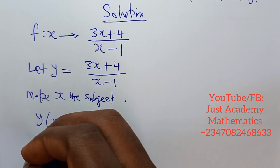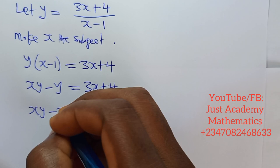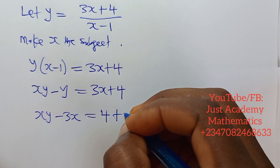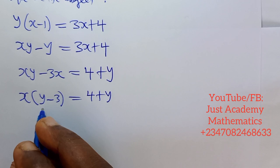So we'll have xy - y equals 3x + 4. Collecting like terms: xy minus 3x equals 4 plus y. Factoring x out: x(y-3) equals 4+y. Dividing both sides by (y-3), we now have x equals (4+y)/(y-3).